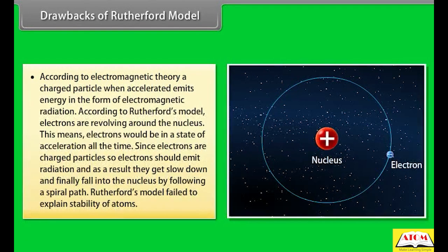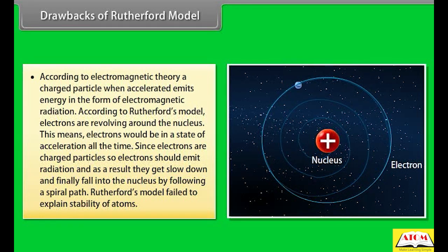Drawbacks of Rutherford's model: 1. According to electromagnetic theory, a charged particle when accelerated emits energy in the form of electromagnetic radiation. According to Rutherford's model, electrons are revolving around the nucleus, meaning electrons would be in a state of acceleration all the time. Since electrons are charged particles, they should emit radiation, get slowed down, and finally fall into the nucleus by following a spiral path. Rutherford's model failed to explain the stability of atoms.